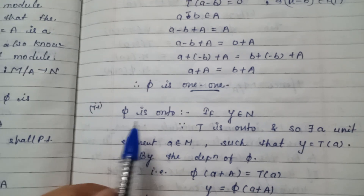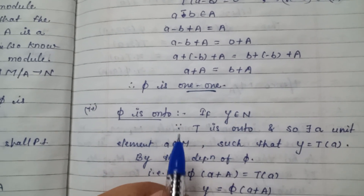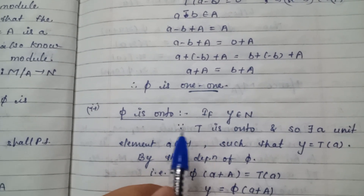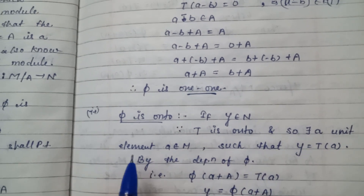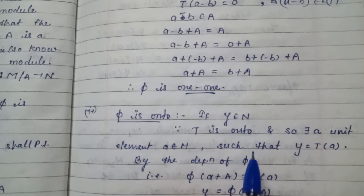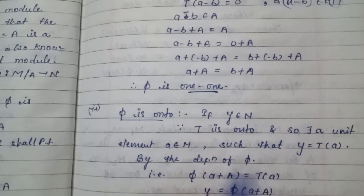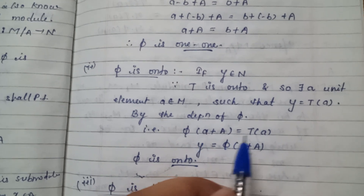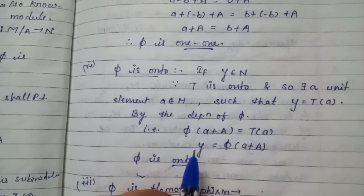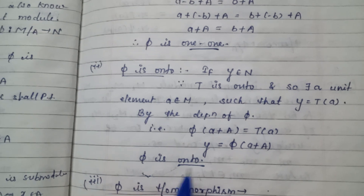Now we will prove that phi is onto. If y belongs to N, since T is onto, there exists an element a belonging to M such that y = T(a). By the definition of phi, phi(a + A) = T(a), so y = phi(a + A). Therefore phi is onto.